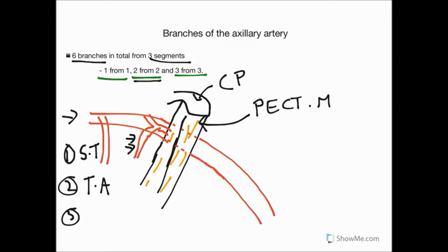The second branch from the second segment comes from under pectoralis minor and pokes out on the lateral surface — this is the lateral thoracic artery. The lateral thoracic does supply the breast from a superior position. So all three vessels mentioned so far — the superior thoracic, the pectoral branch of the thoracoacromial, and the lateral thoracic — are all responsible for supplying breast tissue.